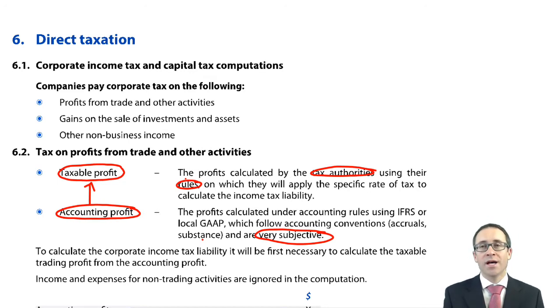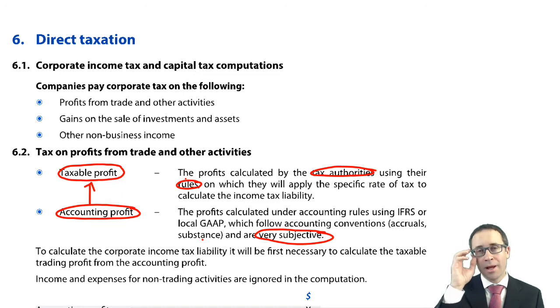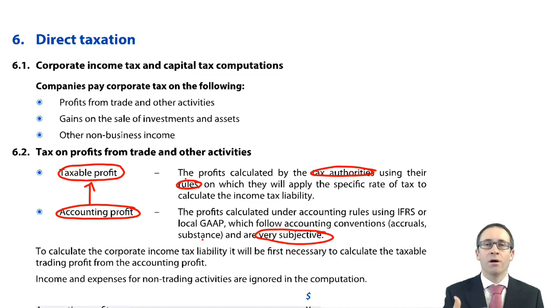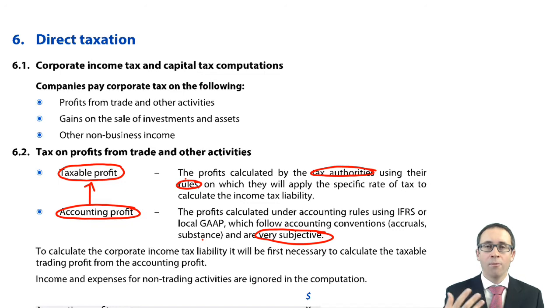Once you have the taxable profits, it's straightforward — you simply apply the tax rates from that competent jurisdiction to work out the tax liability.